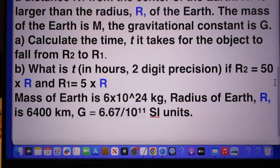And below are all the numbers that you should use. The mass of the earth is 6 times 10 to the 24 kilograms. The radius of the earth is 6400 kilometers. And G is 6.67 times 10 to the minus 11 SI units.